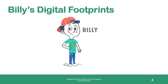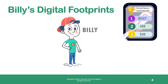You can learn a lot about someone by simply studying their digital footprints. Let's see what we can learn about Billy from just three of his digital footprints. First, Billy's name appears on top of a leaderboard of a game called Virtual Racers. This tells us two things about Billy: that he likes racing games and he is a good gamer.